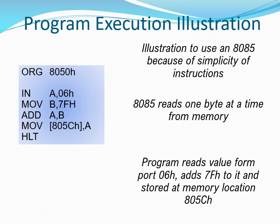Let's illustrate the execution of a program in a microprocessor. For our illustration, we are going to use the Intel 8085 because of the simplicity of its instructions. The 8085 reads instructions and data one byte at a time from memory, which will make our illustration easier to comprehend. The program we are going to use reads the value on port 06H, adds a constant to it, and stores the results in memory. The program is written using the 8086 style of assembly programs, and the letters A and B in the program are names of registers.